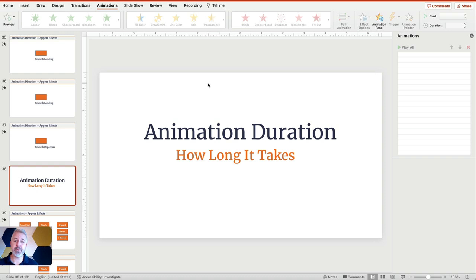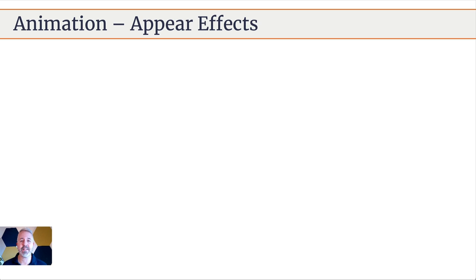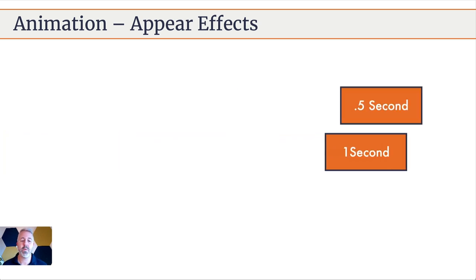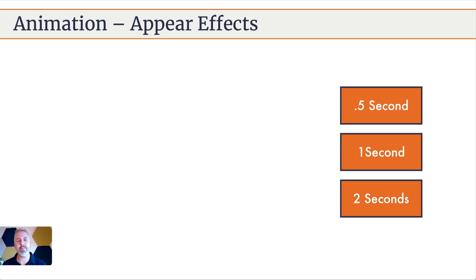Let's talk a little bit more about duration — this is how long it takes for an animation to complete. Here are a few examples: half a second, you can see how fast that comes in; one second; two seconds. We talked in another video about how slow animations can feel boring and may just be too slow. Animations want to be snappy — you don't want someone sitting around waiting two seconds for something to come into play. So I don't often use that; I use half a second or one second.